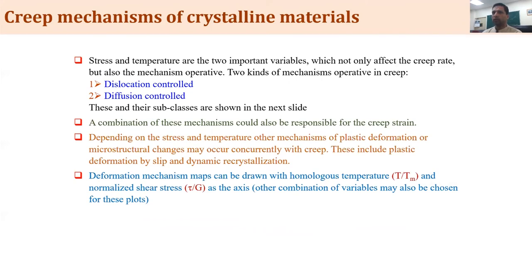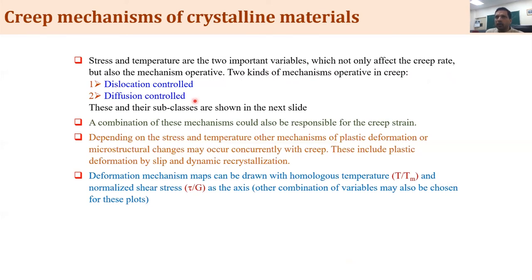Now let's look at the creep mechanism — only for crystalline materials. Creep will also take place in non-crystalline materials but that is beyond the scope of this lecture. Stress and temperature are two important variables that affect not only the creep rate but also the mechanism operative. There are primarily two kinds of mechanism: dislocation-controlled and diffusion-controlled. These and their subclasses are shown in the next slide.